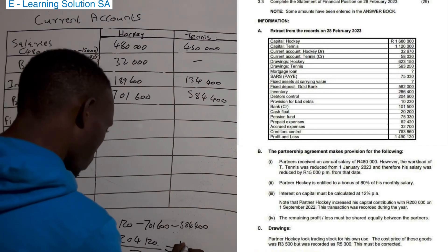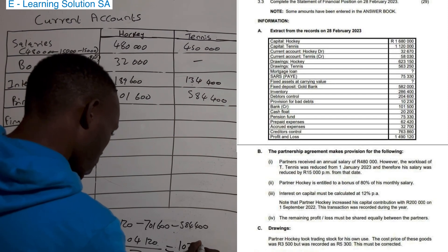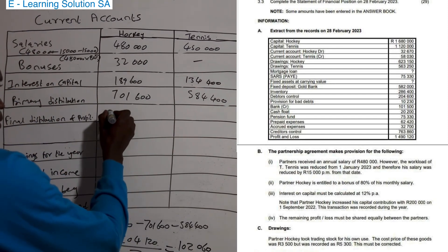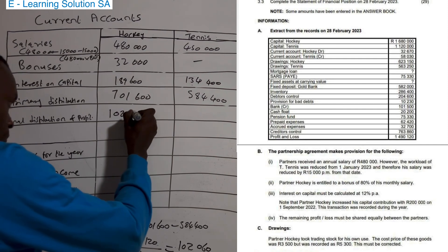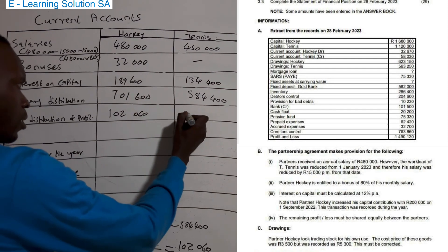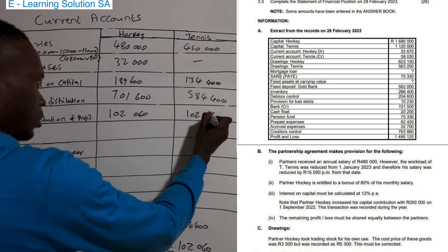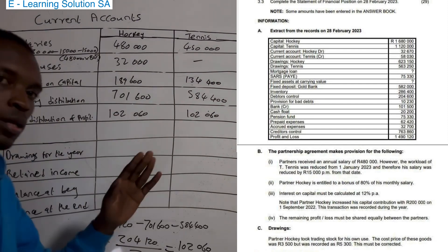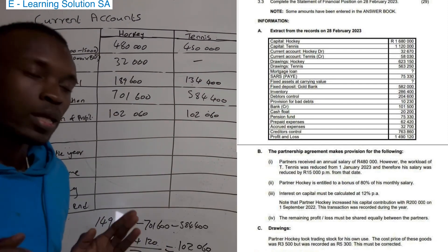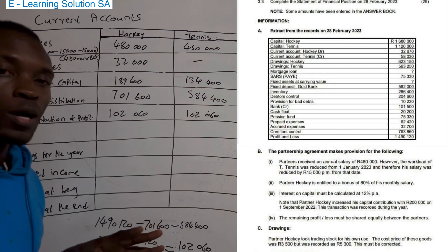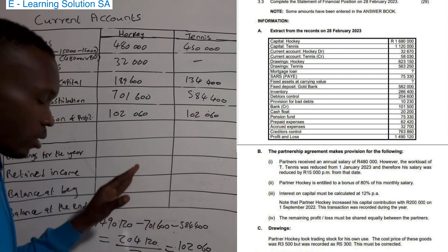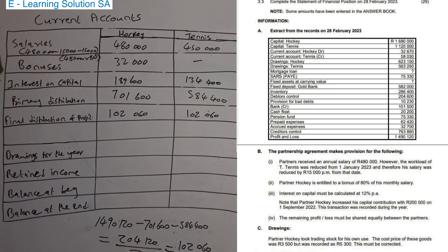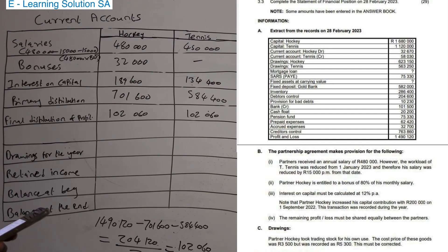The instruction says the remaining profit or loss must be shared equally between the partners. The remaining amount is 204,120, and when we divide by 2 each partner gets 102,060. So each partner is allocated 102,060. The key process is: first subtract the primary distribution, then allocate the remainder according to the ratio — in this case equally.